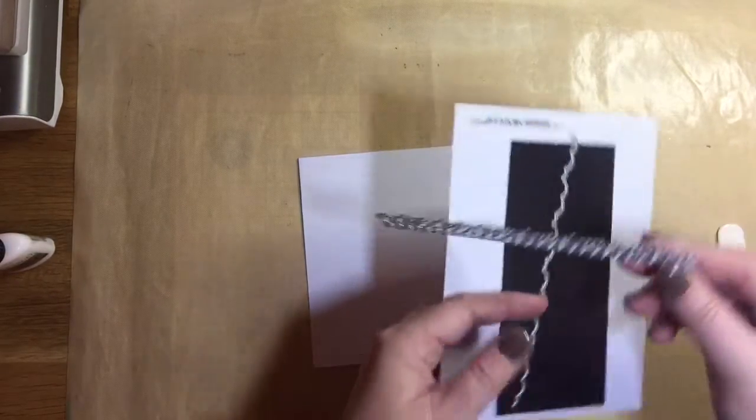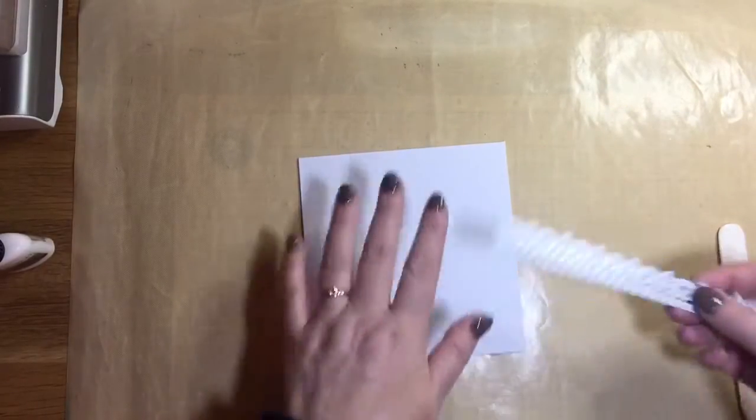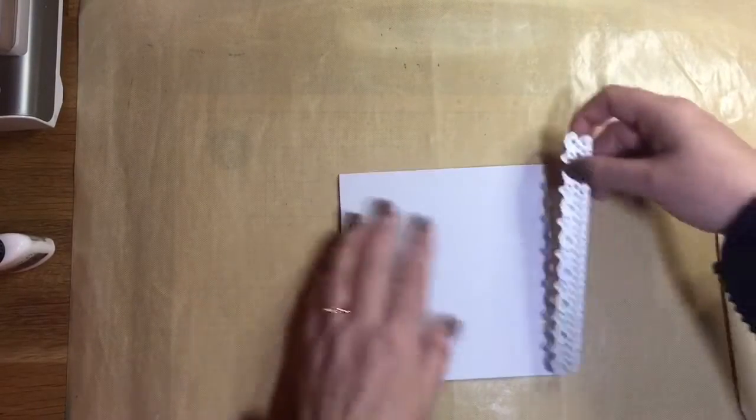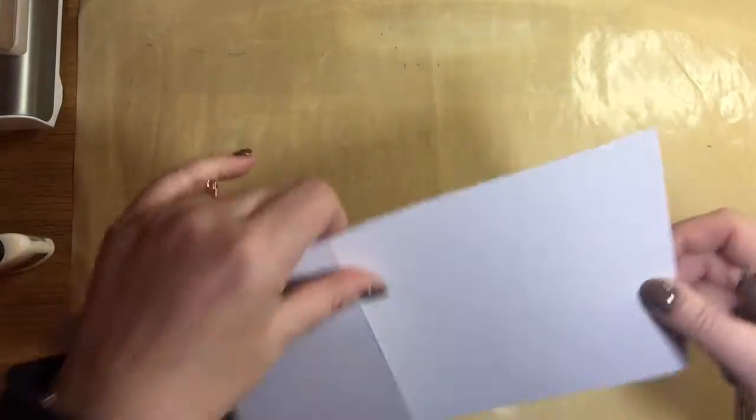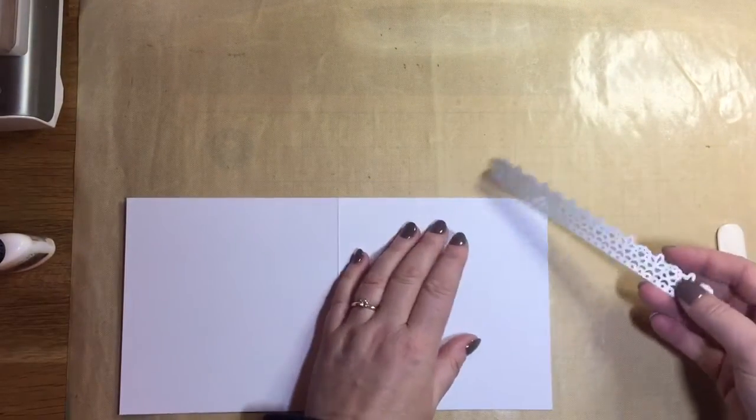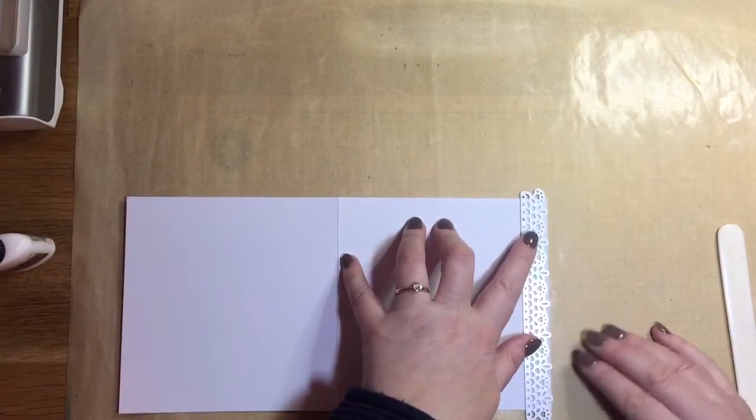I'm going to start with one of the borders from the Dainty Daisy Border Set. What I want to do is put this down the edge of my card. These borders are great because they don't cut on one edge.